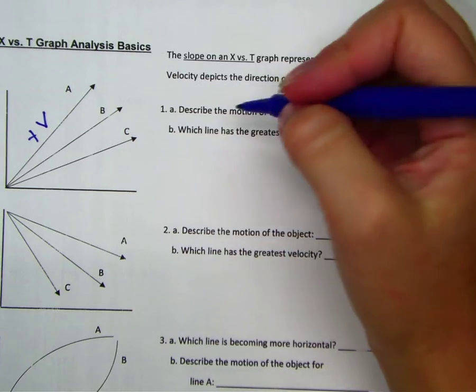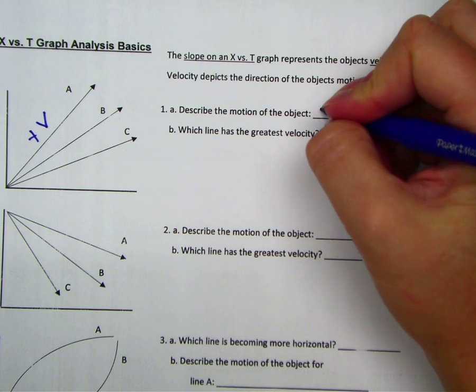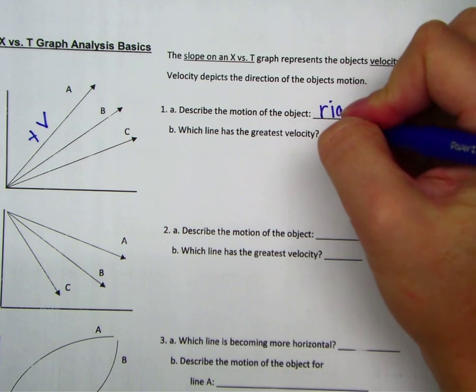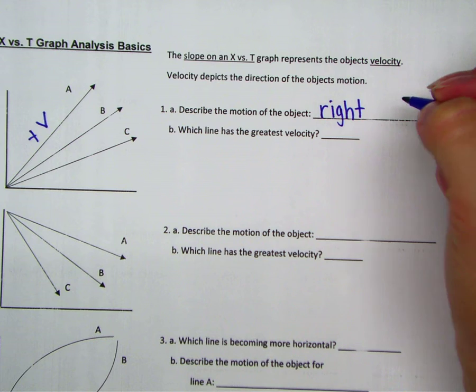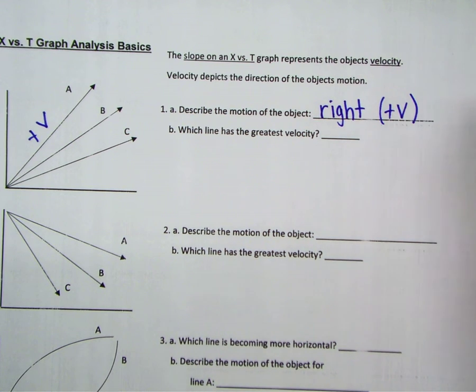So when it says describe the motion of the object, I always like to say it's going to the right. If you want to say it's going forward or positive, that's fine. So again, the direction of the object's motion is always determined by the velocity, which on an x-versus-t is the slope.